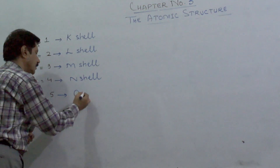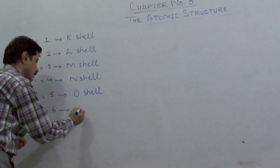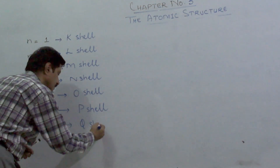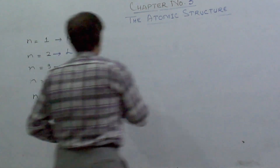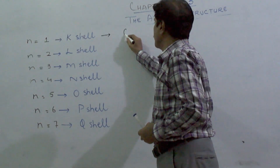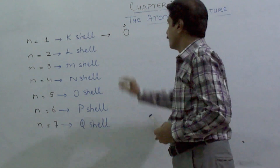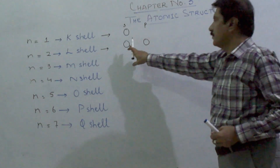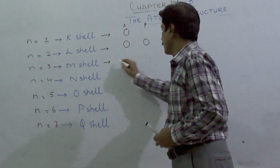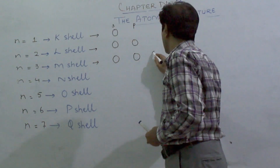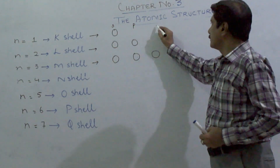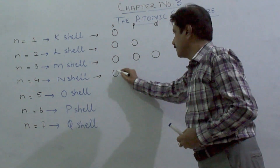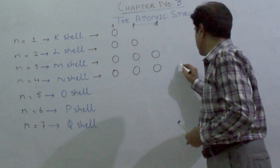The shells are designated as: K shell (n=1), L shell (n=2), M shell (n=3), N shell (n=4), O shell (n=5), P shell (n=6), and for n=7 it must be Q shell. In K shell there is only one orbital which is the S orbital. In L shell there are two orbitals: S and P. The third shell M comprises three orbitals: S, P, and D. The fourth shell N has four subshells: S, P, D, and F.